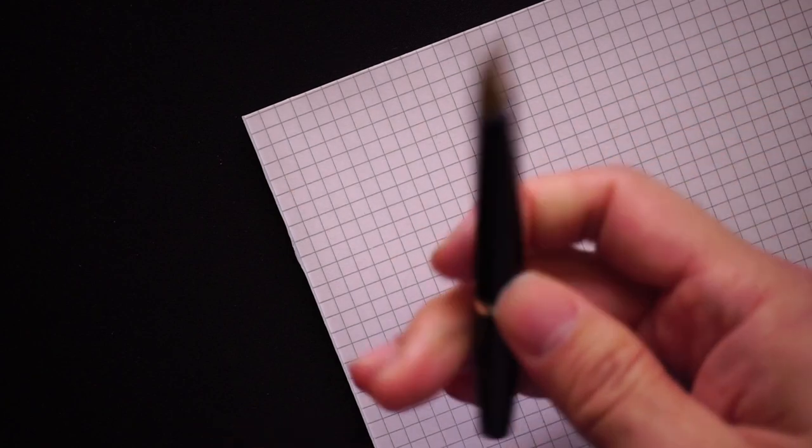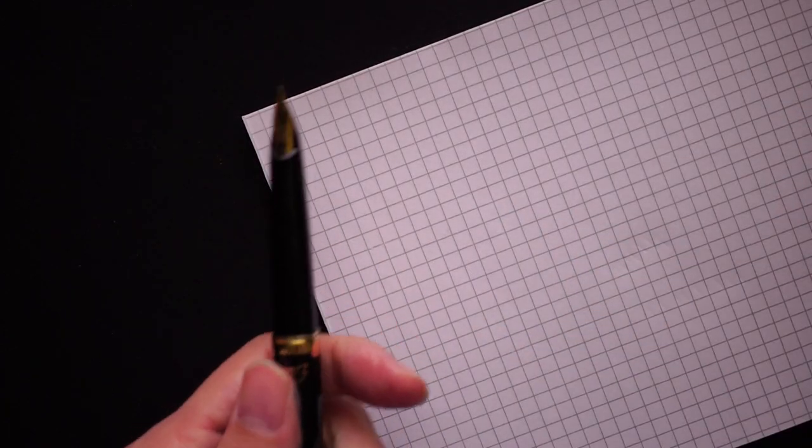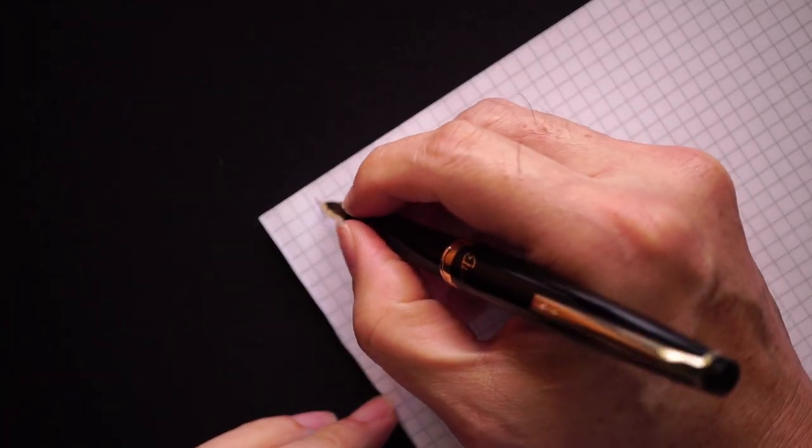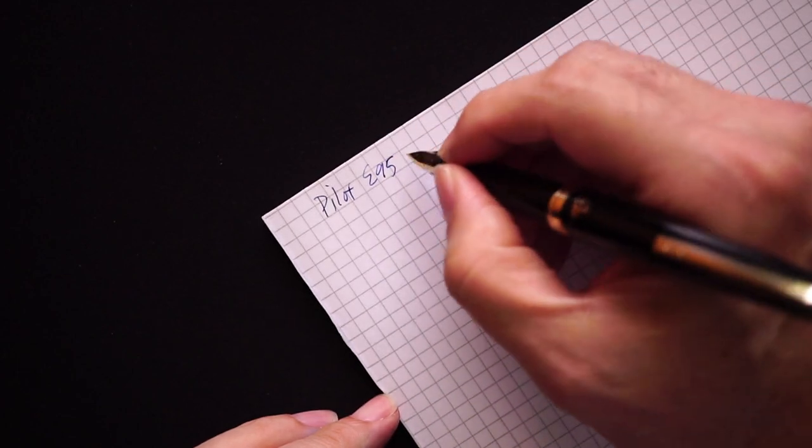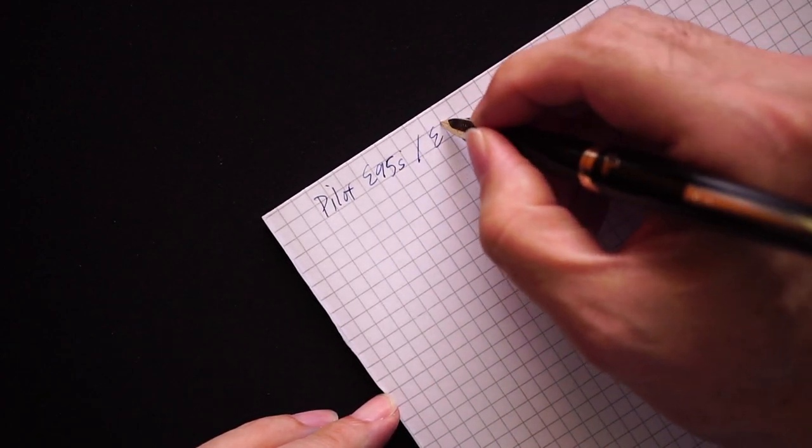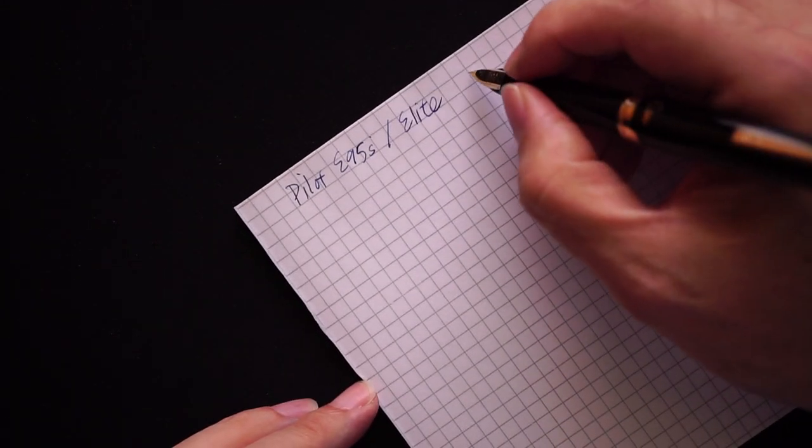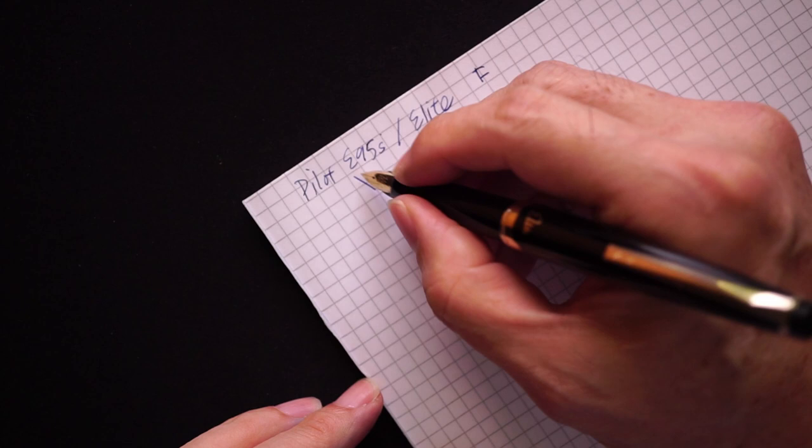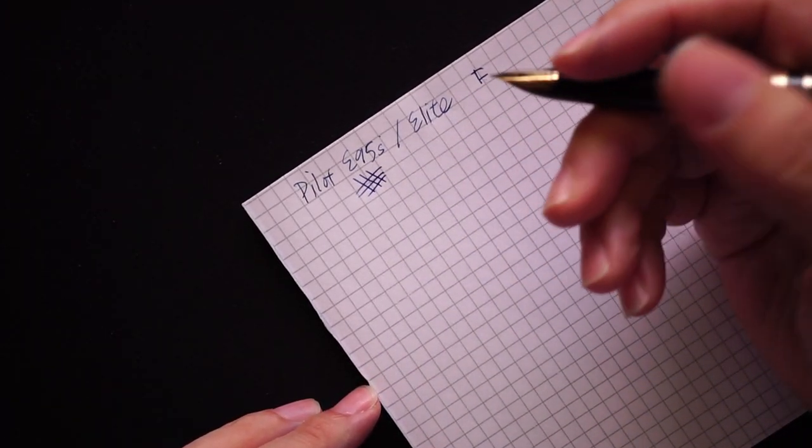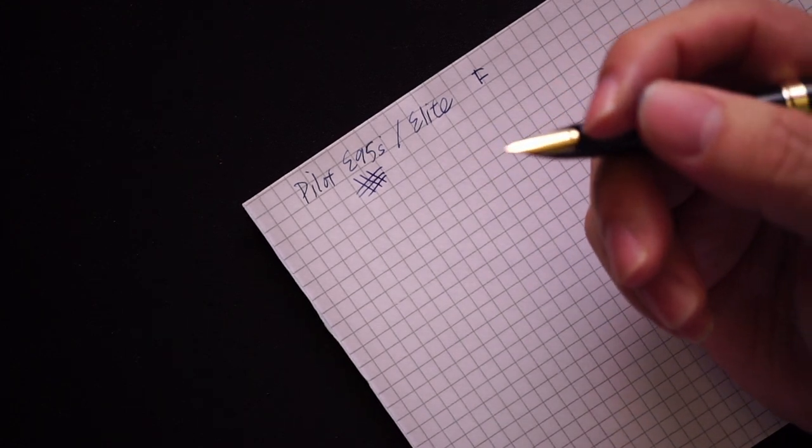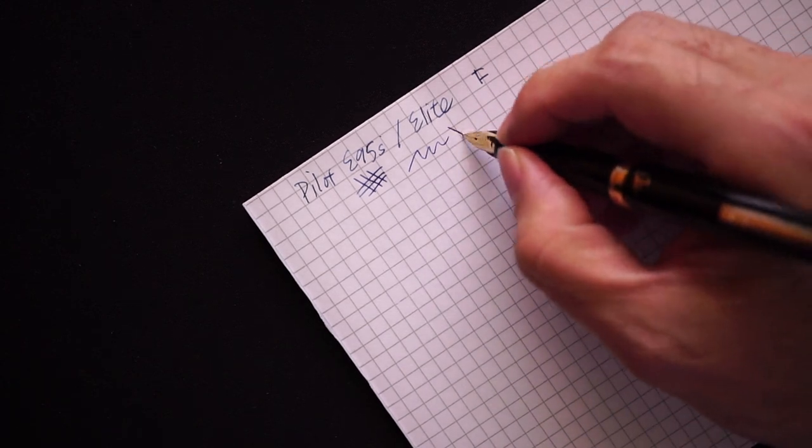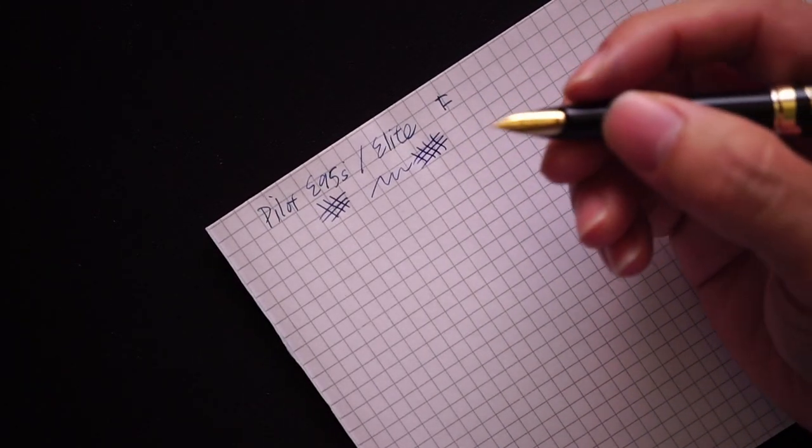I'm going to do a little bit of writing right now. Let me raise the table a little bit. Starting off, I think that's probably the good height. I'm going to start off with the Elite or the E95S. This is the Pilot E95S or Elite, and this one is in fine. It's a beautiful fine nib.